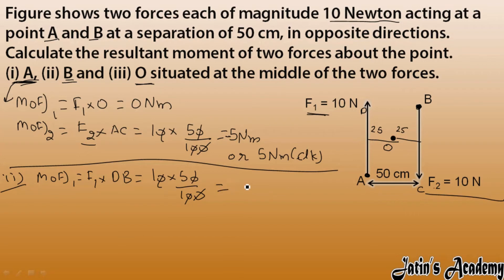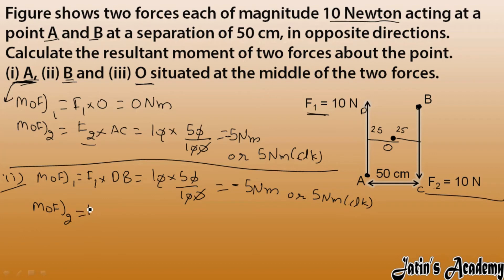Checking direction for F1 about B: it is clockwise, so minus 5 Newton meters, or 5 Newton meters clockwise. Now for F2 about B: F2 acts at B which is the hinge point, so perpendicular distance is zero — giving zero Newton meters. Part 2 is clear.